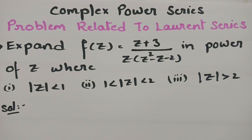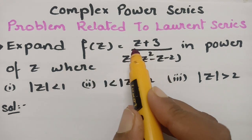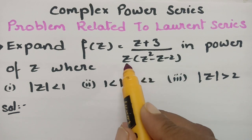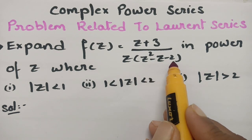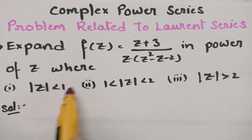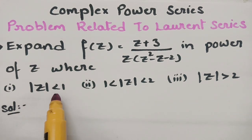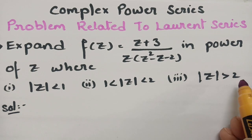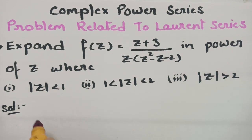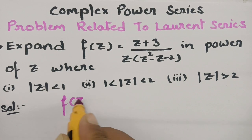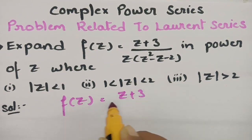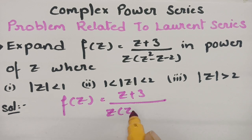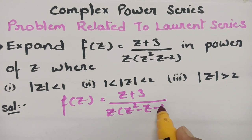This video is on problems related to Laurent series, a topic from complex power series. Today we are going to expand f(z) = (z+3) / [z(z²-z-2)] in parts of z where the conditions given are: |z| < 1, 1 < |z| < 2, and |z| > 2.